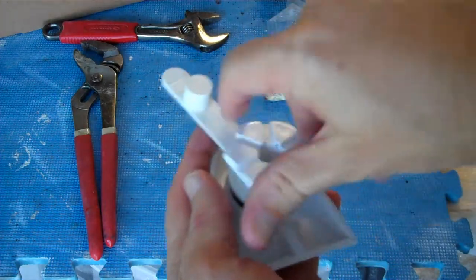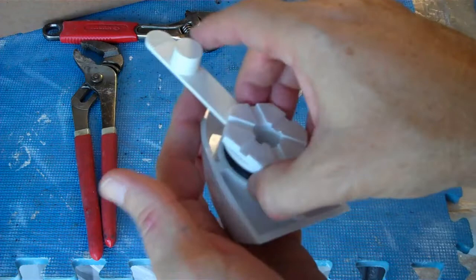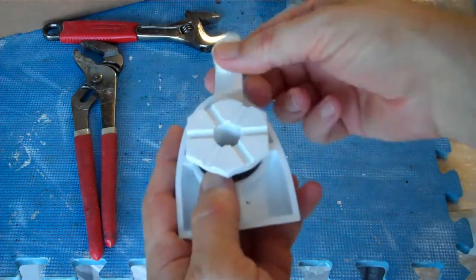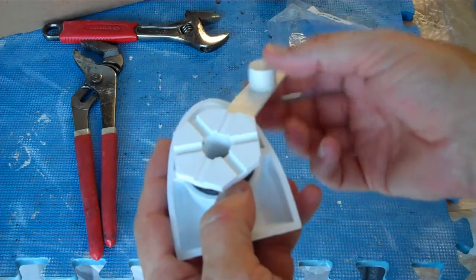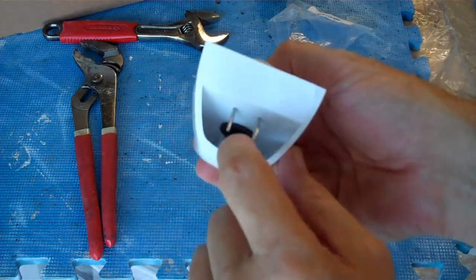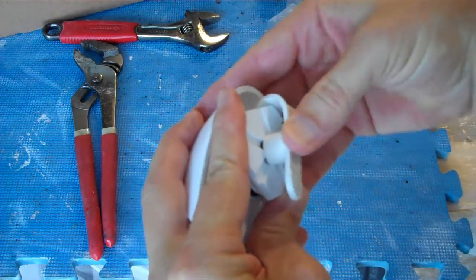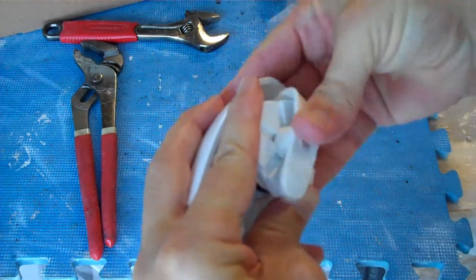And so you sandwich those through there, and supposedly you shouldn't need any silicone or any caulking. You should just be able to tighten that down enough so that water doesn't get in, assuming this ball is floating correctly or you have this plug in. So generally you want to have the plug in.